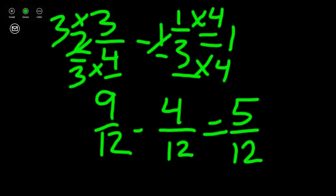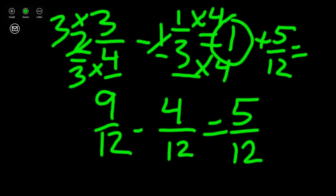We now have to look back up to add our whole number one to five-twelfths. So we add one plus five-twelfths, and our answer is one and five-twelfths.